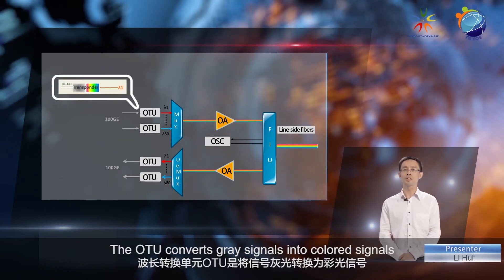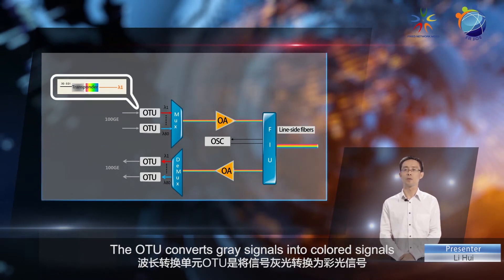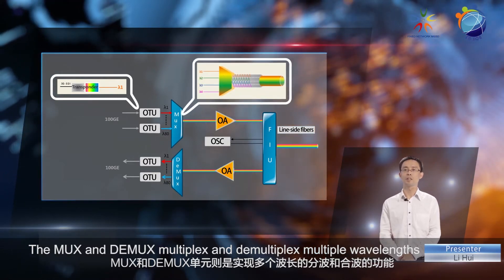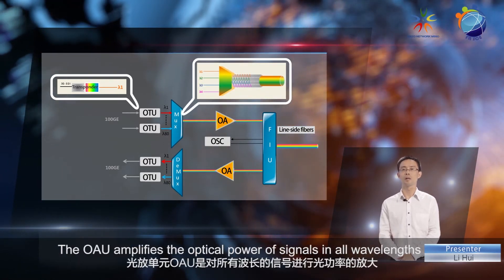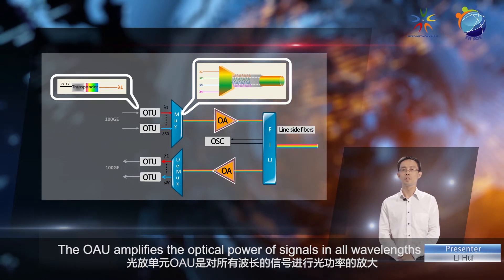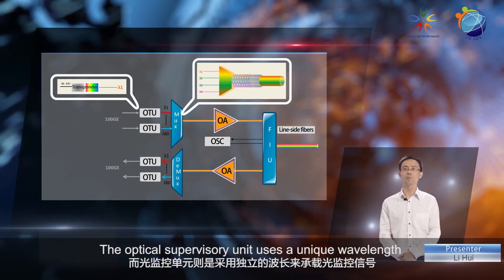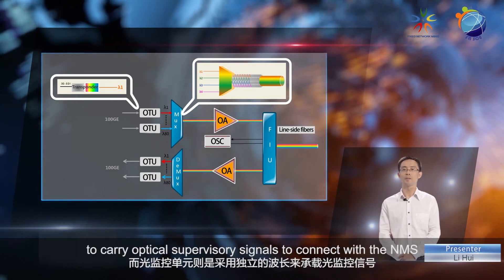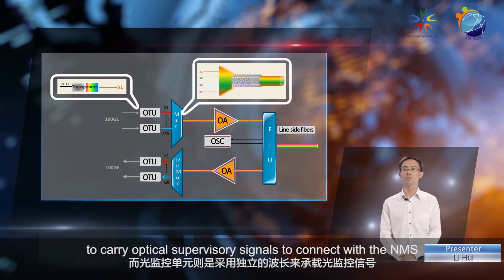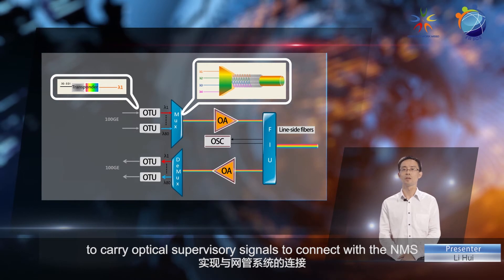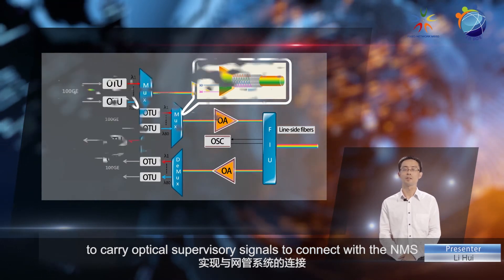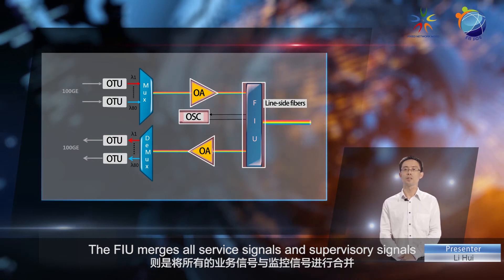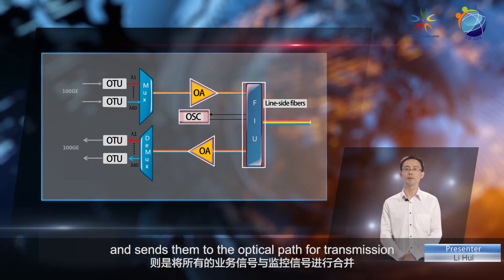Let's look at the functions of each part. The OTU converts gray signals into colored signals. The MUX and DMUX multiplex and demultiplex multiple wavelengths. The OAU amplifies the optical power of signals in all wavelengths. The optical supervisory unit uses a unique wavelength to carry optical supervisory signals to connect with the network management system. The FIU merges all service signals and supervisory signals and sends them to the optical path for transmission.